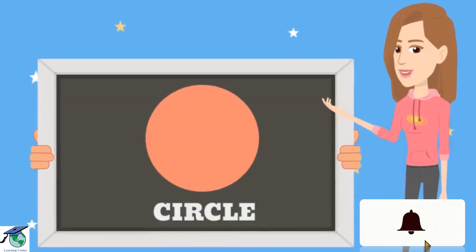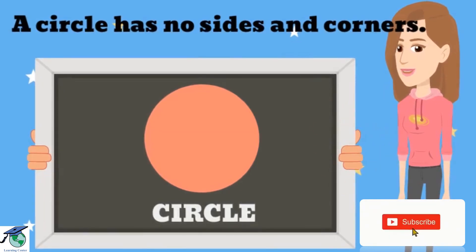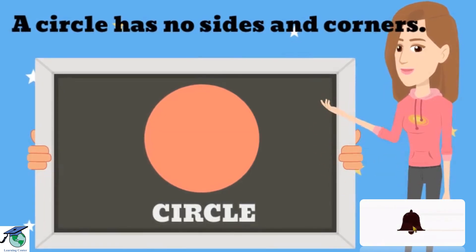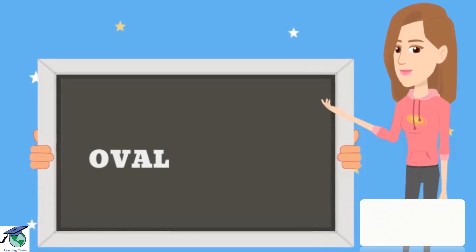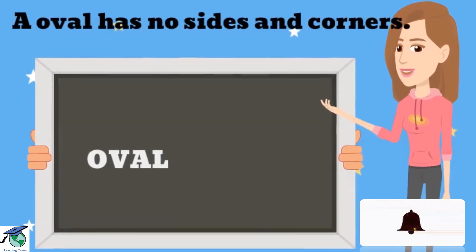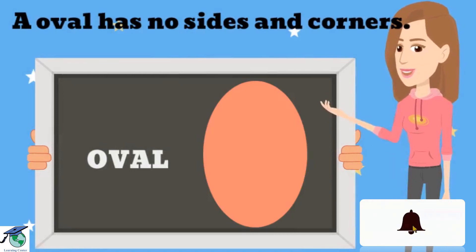This is a circle. A circle has no sides and corners. This is an oval. An oval has no corners and sides.